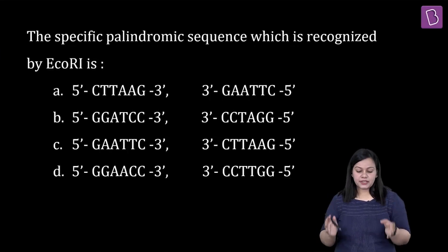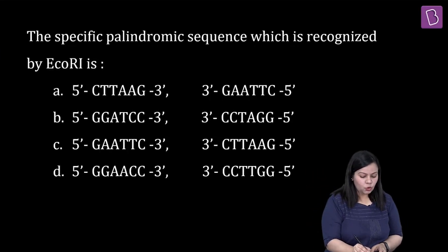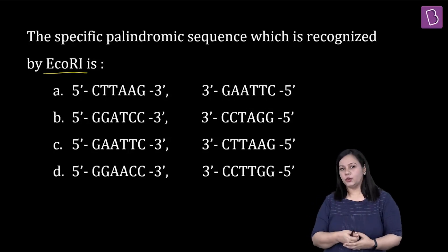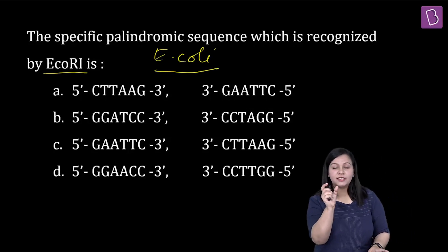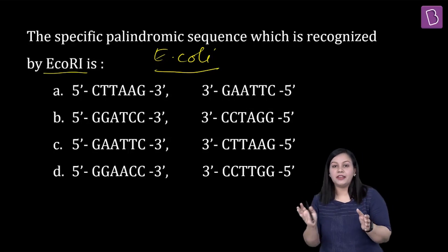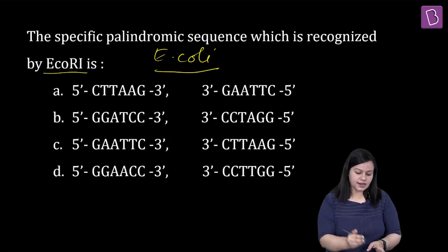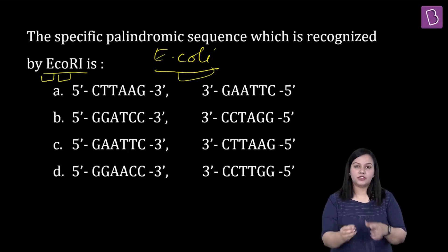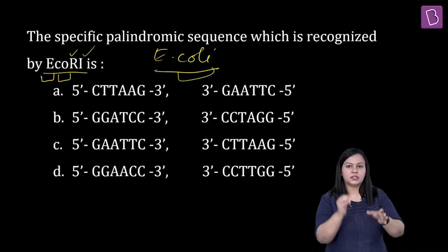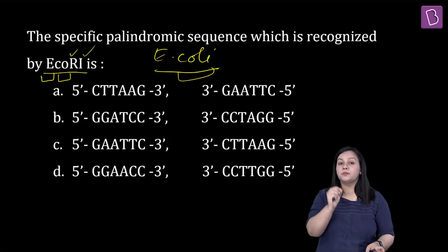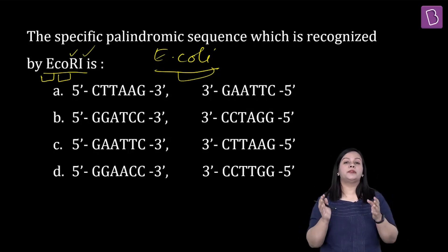Chaliye dekhte hain ab ham is question ko. The specific palindromic sequence which is recognized by EcoRI is — ab EcoRI kya hai? It is a restriction endonuclease obtained from E. coli bacteria. Uska nomenclature aise hi hota hai — enzymes ka naam organism se derive kiya jaata hai. E stands for Escherichia, CO stands for coli, R stands for restriction, and the Roman numeral I represents the first enzyme. So EcoRI is the restriction endonuclease which is obtained from E. coli bacteria.